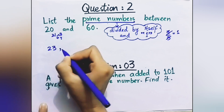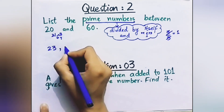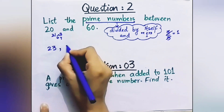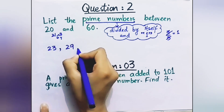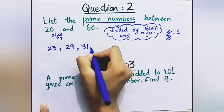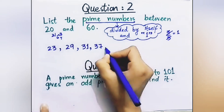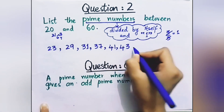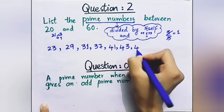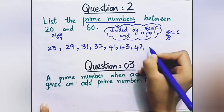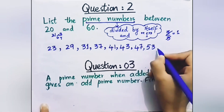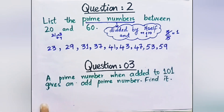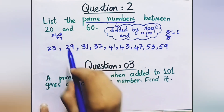So the list of prime numbers between 20 and 60 is: 23, 29, 31, 37, 41, 43, 47, 53, 59.